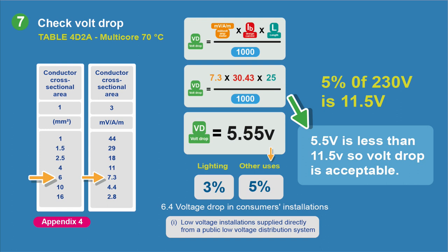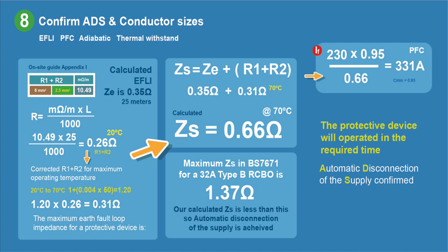There is a preliminary check you could do right at the beginning to see if the cable might be suitable — I'll show that at the end. So that's how we check our volt drop. Next we can consider our earth fault loop impedance and confirm whether automatic disconnection of the supply will be achieved. This is the calculated method — obviously the circuit's not installed yet so we can't test it. Our formula for Zs is Ze plus R1 plus R2.